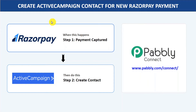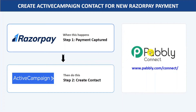Hey everyone, in this video we are going to learn how you can automatically create a contact in ActiveCampaign for every new Razorpay payment. Razorpay and ActiveCampaign are two different applications with no direct connection, so we are going to integrate both with the help of Pabbly Connect. Whenever a new payment is captured in Razorpay, Pabbly Connect will automatically create a contact in ActiveCampaign. This process requires no coding knowledge and any non-technical person can do this easily.